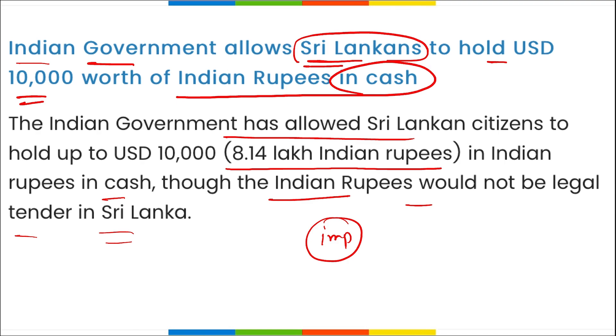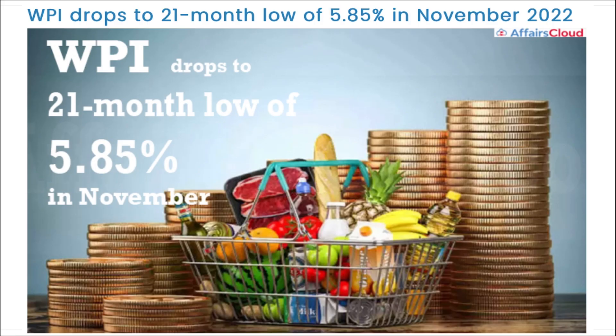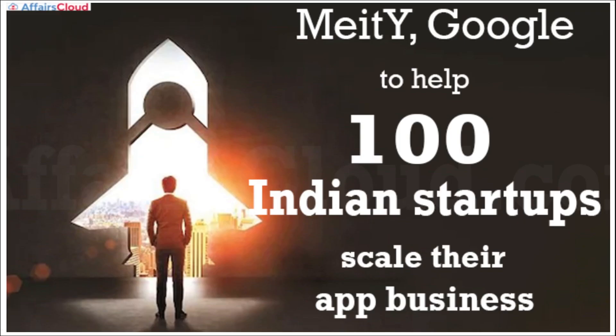The Wholesale Price Index (WPI) has dropped to a 21-month low of 5.85% in November 2022. This decline is due to easing prices of food, fuel, and manufactured items. It had declined to 8.39% in October 2022, while inflation was around 14.87% in November 2021. The reason is the fall in prices of food articles, basic metals, textiles, chemicals, and paper products.